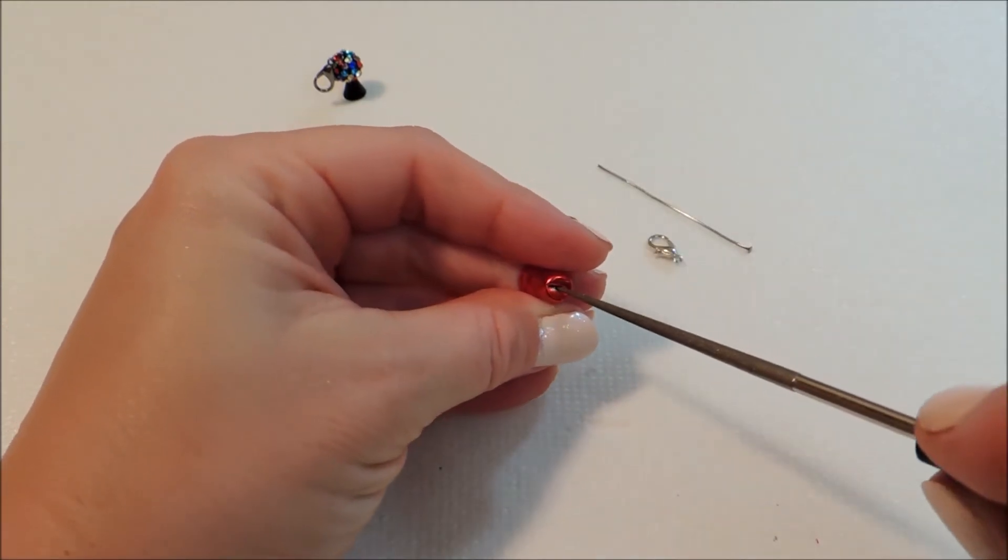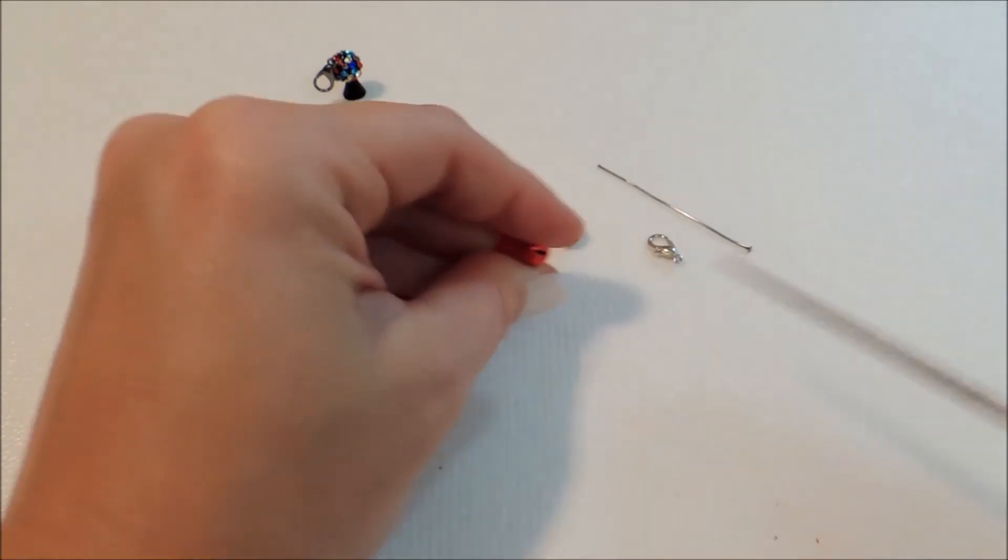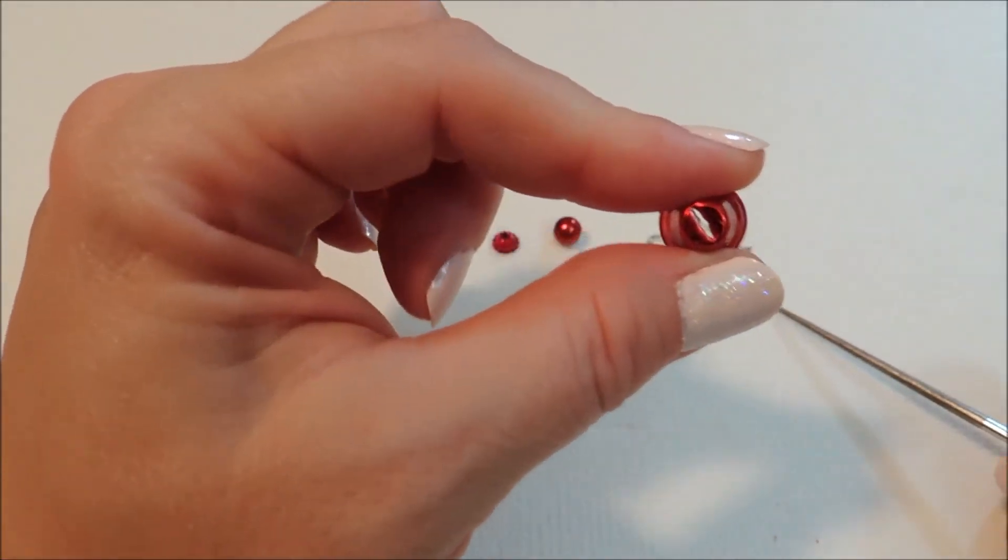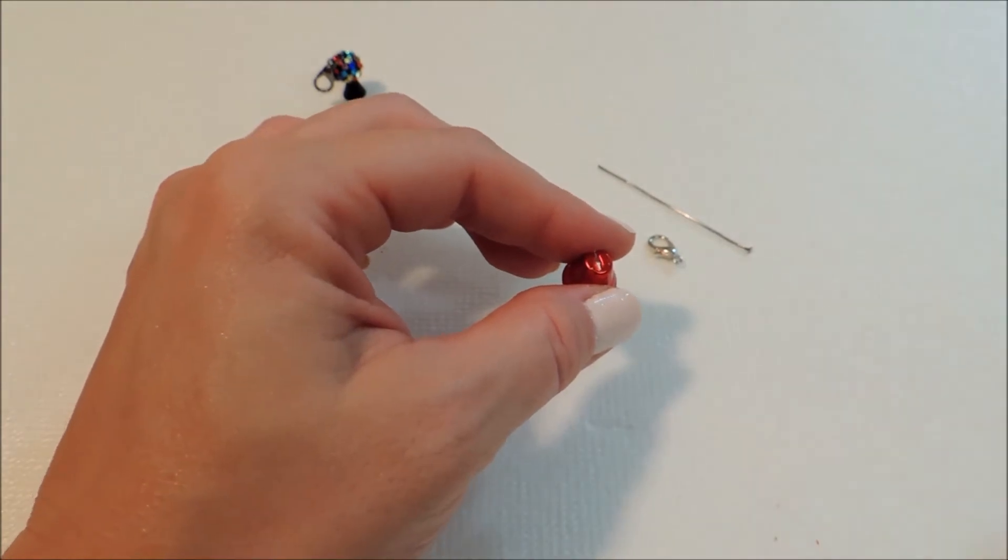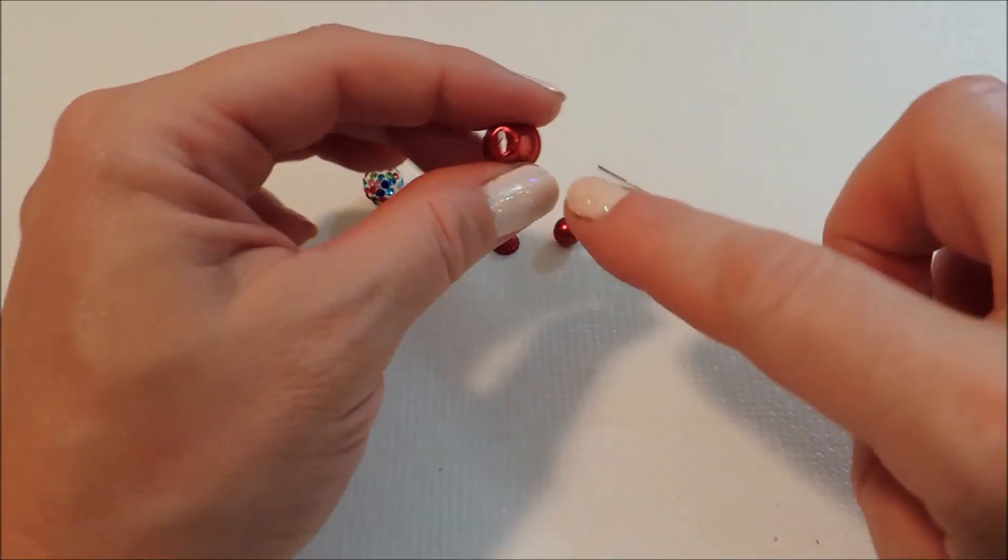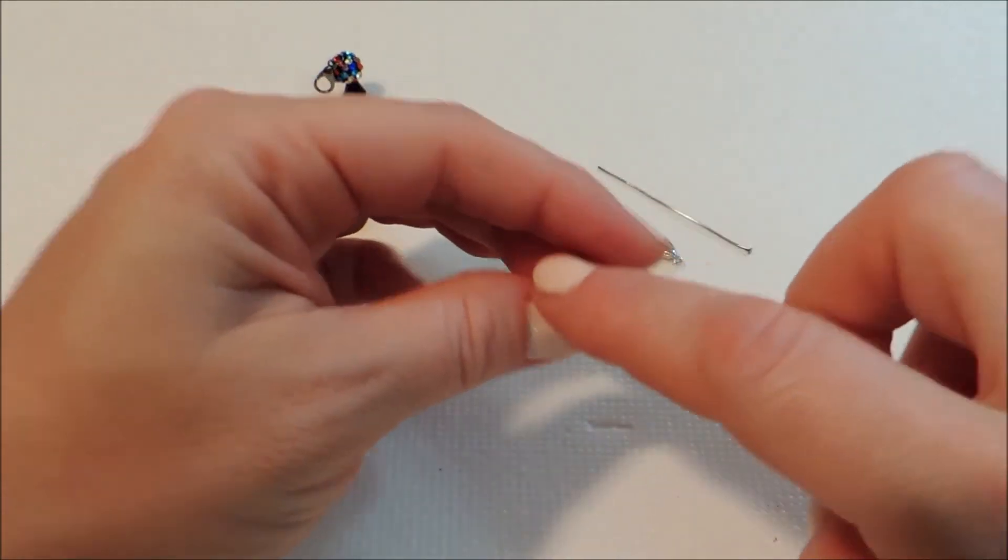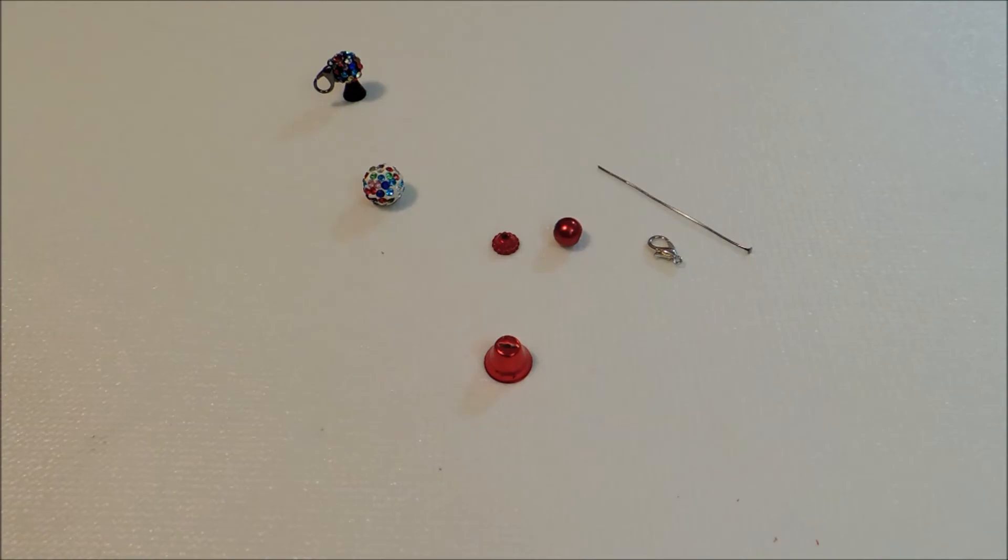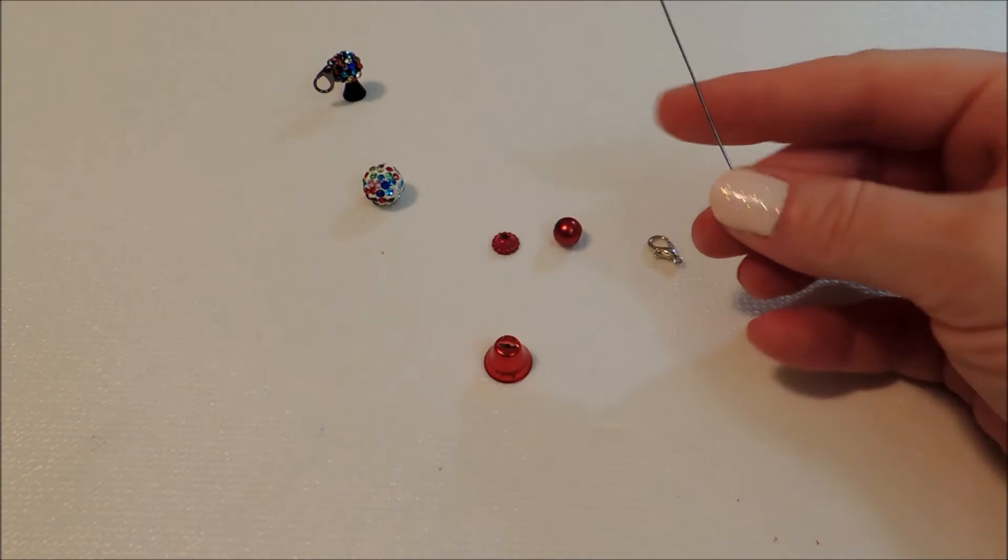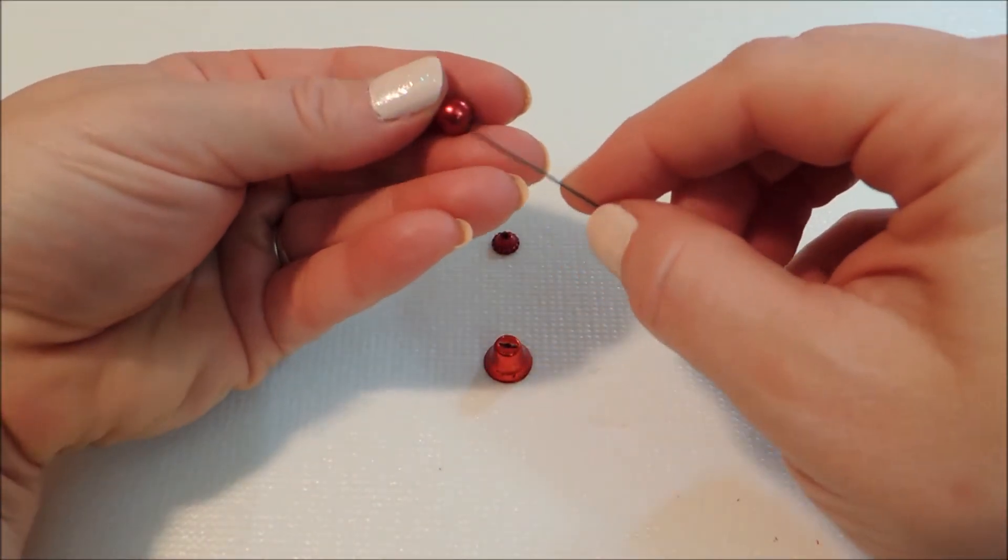Just take your bead reamer and make sure that you've got a hole big enough right in the center for your pin to come through. With that wide slot it looks like it would just slide side to side on our head pin, but having that pearl inside to help stabilize it is going to keep it from doing that a little bit.